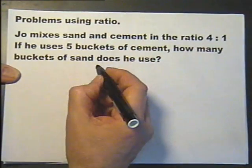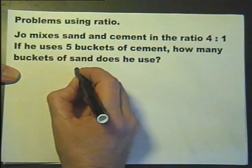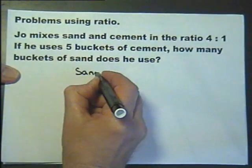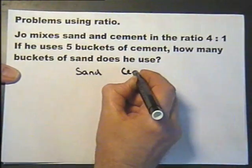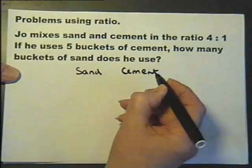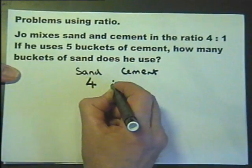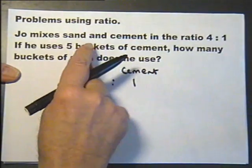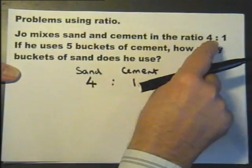I would suggest the easiest way is to actually set out what's being mixed and underneath it write the ratio. Make sure that the words and the numbers are around the same way. Sand, cement, sand, cement.